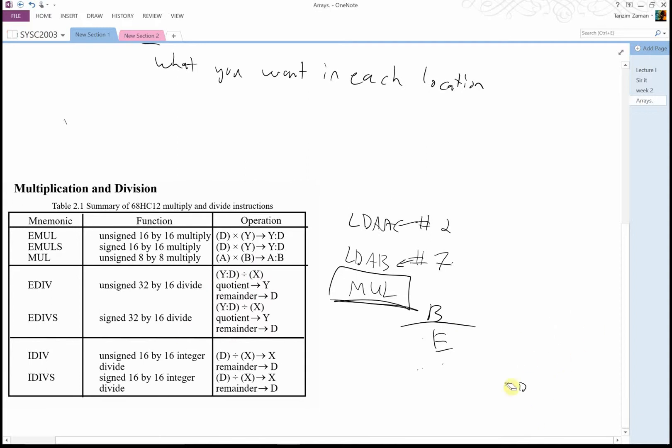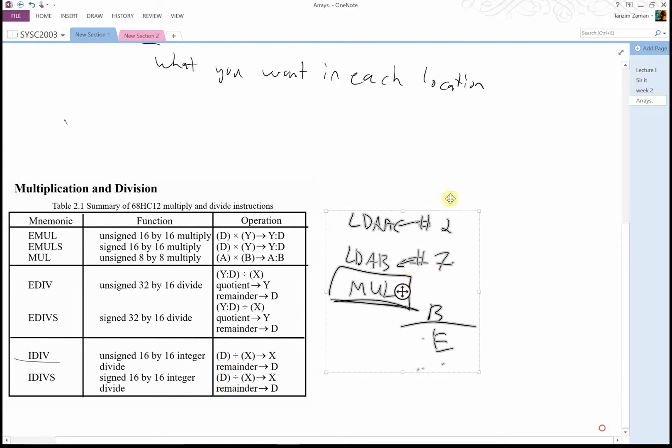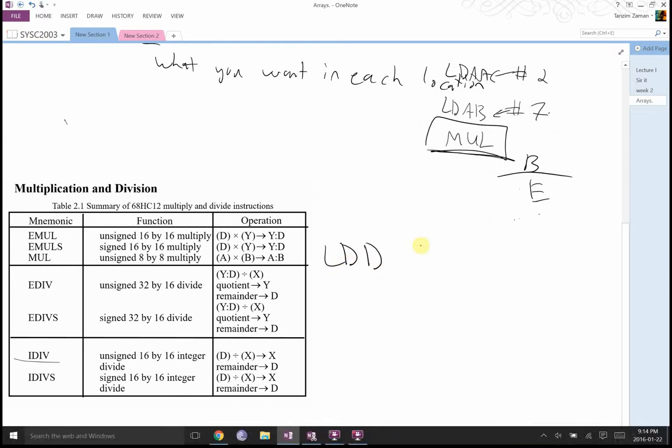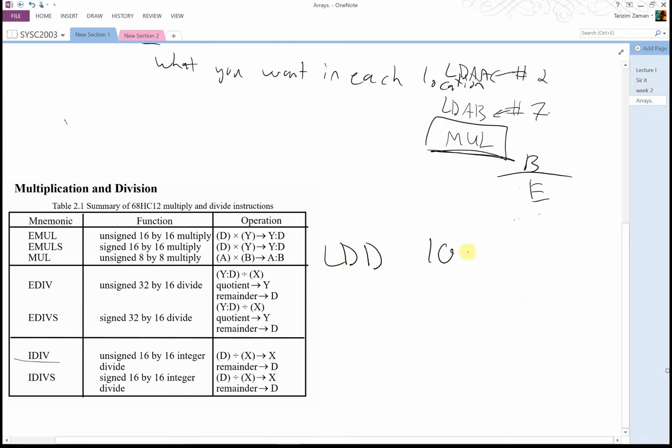All right, well what if we do division. Let's take a look at division. There's E divs, all the ones over here. Let's do the unsigned 16 by 16. So you need something in D. Let's go ahead and just move that over there. Let's load something in D. Let's load the number 100 in D, and then let's load the number, L D X 99 in X. Let's just make hashtags.